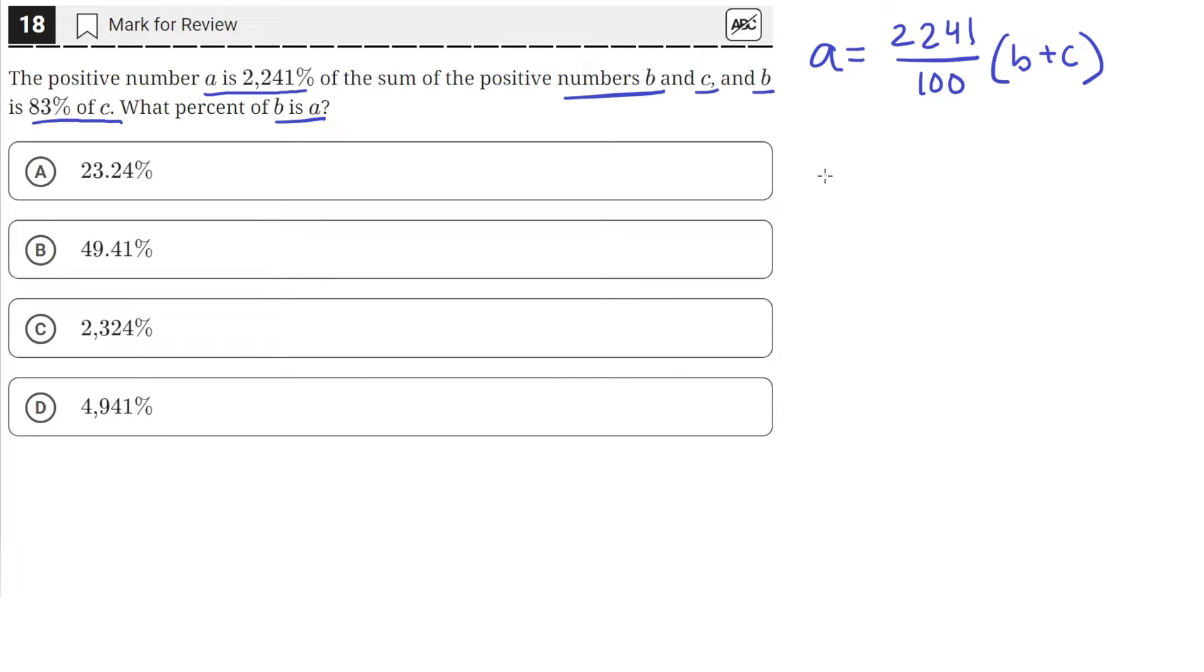And we're also told that B is 83%, so 83 over 100, times C. So it's 83% of C. Okay, so let's use this equation, the second one, and plug this value of B.